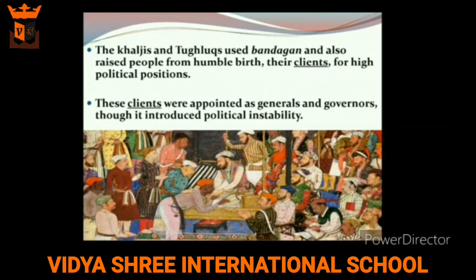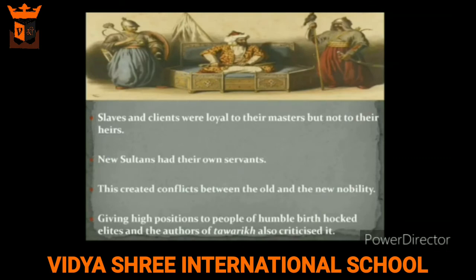The Khiljis and the Tughlaqs continued to use Bandagan and also raised people of humble birth, who were often their clients — someone under the protection of another or dependent on someone. These clients were also appointed as generals and governors, though this introduced political instability, because the authors of Persian Tawarikh criticized the Delhi Sultans for appointing low-born individuals to such high offices.